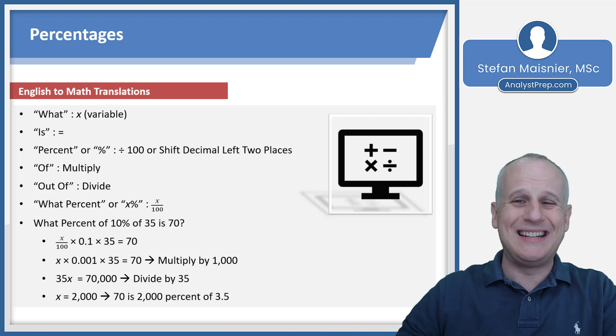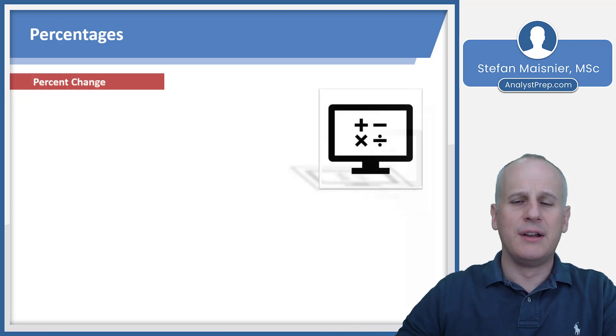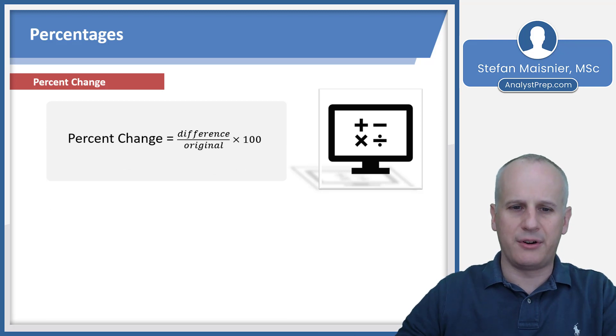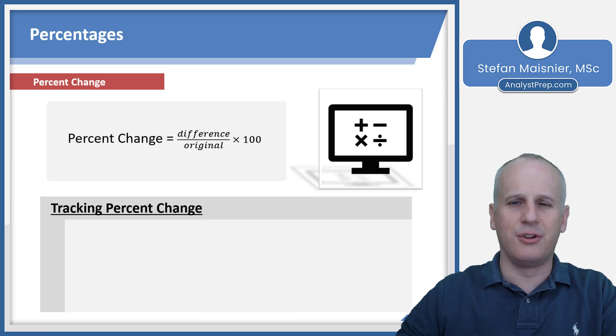The way that the exam generates difficulty is by giving you more steps to complete, more details to work through rather than introducing differential calculus. The last topic with percentages is what is known as percent change. So percent change is a formula of the difference between two values divided by the original times 100. You have to track which is the original and which direction you're going.